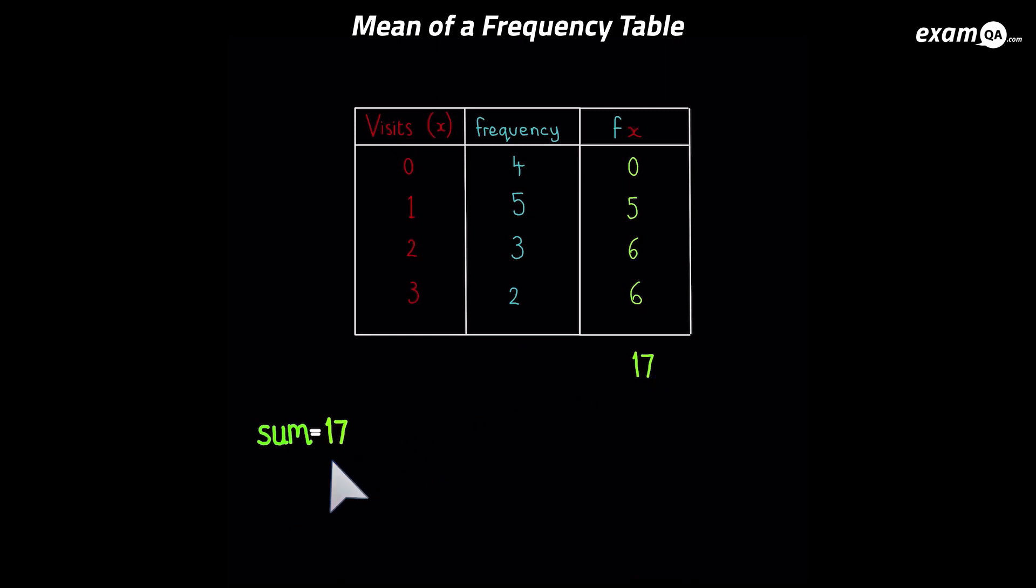Now, how many values have we got? Well, that's the sum of the frequency column. So you add up the whole frequency column. And that gives you your n value. How many terms have you got? Or how many values have you got? And we have 14 values here. So our n is 14.